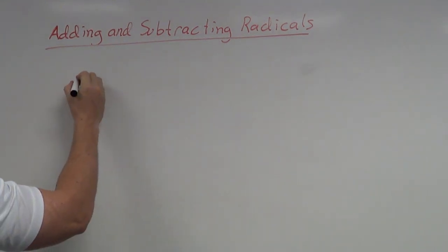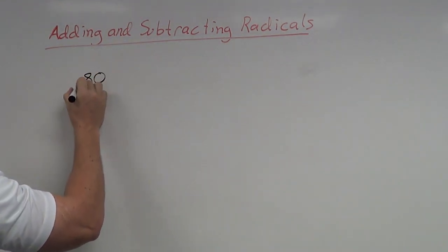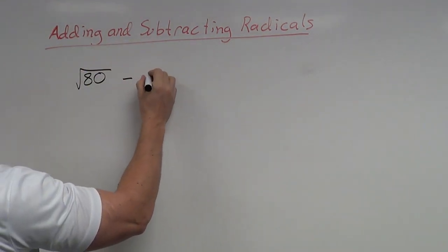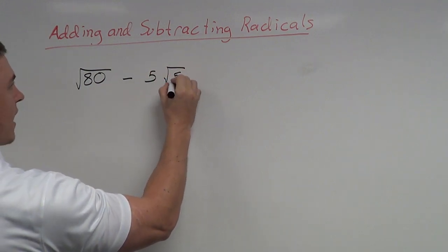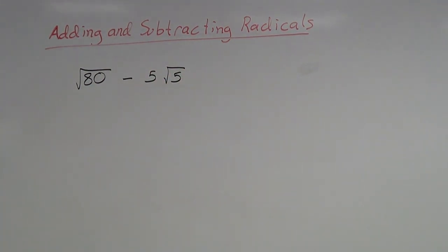For example, what if I had the square root of 80 minus 5 root 5? Some students would throw up their hands and say they can't do it because root 80 and root 5 are not the same. But what you have to keep in mind is that larger numbers underneath the radical can actually be simplified.